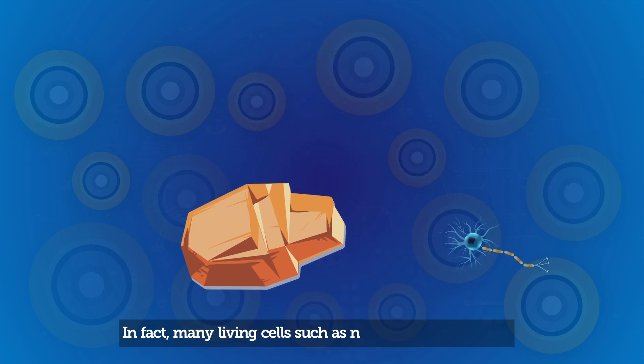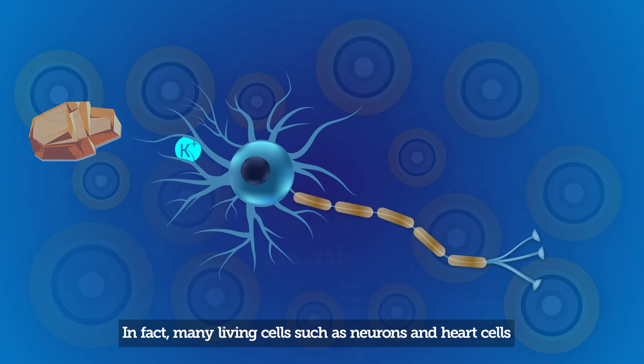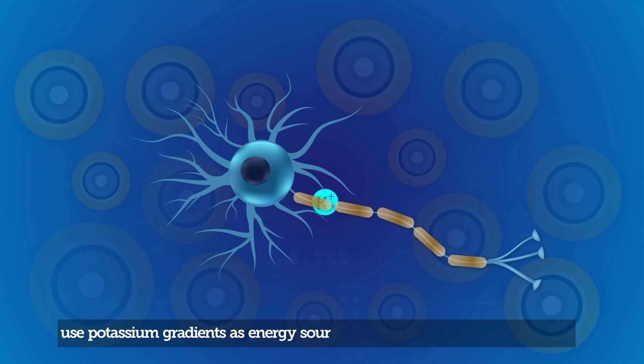In fact, many living cells such as neurons and heart cells use potassium gradients as energy sources to conduct important processes.